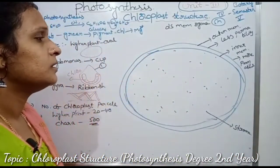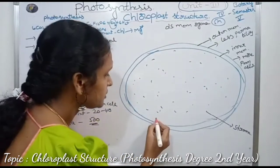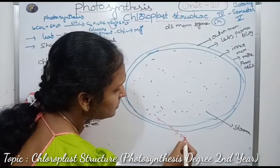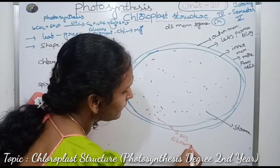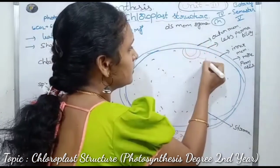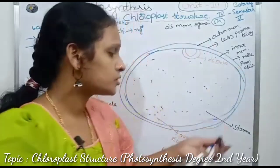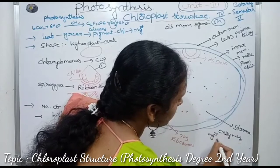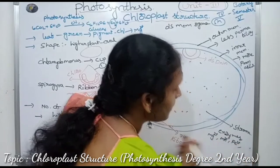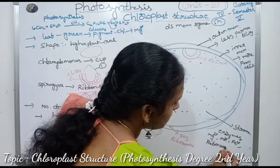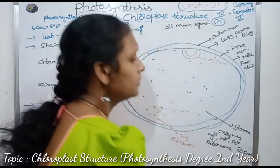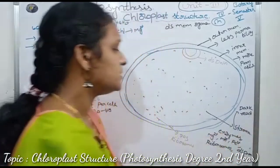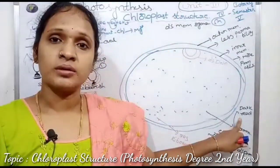Below the inner membrane, the liquid-like space is called the stroma. The stroma contains some ribosomes of the 70S type. Chloroplasts contain their own double-stranded DNA. The stroma also contains some enzymes, ions such as magnesium ions, manganese ions, and ferrous ions, as well as ribosomes and double-stranded DNA. Dark reactions take place in the stroma, and these enzymes and ions are utilized for the dark reactions.